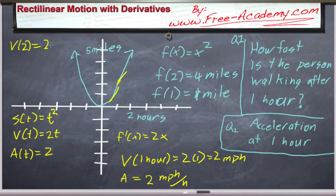And now we can also go on and find the velocity after 2 hours. So we got v of 2 is 2 times 2. This person is now walking at 4 miles per hour. And guess what? This fits. Our acceleration at 1 hour was 2 miles per hour. 1 hour later, we're going 2 miles per hour faster, which is exactly the results we were expecting.